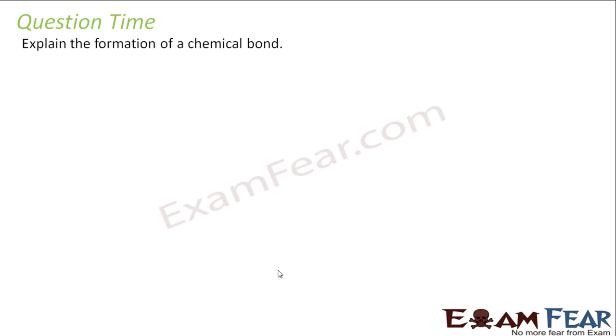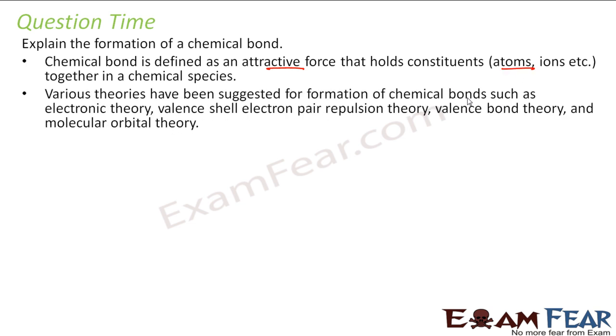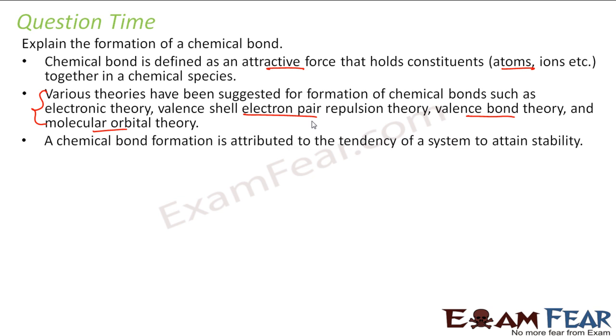Let's take some questions. Let's explain the formation of chemical bond. Very basic question. Why do we have chemical bond? Chemical bond is what? Attractive force that binds atoms or ions together. And there are various theories for the chemical bond. We have VSEPR, we have valence bond theory, molecular orbital theory, and we have Lewis theory. So many theories for chemical bond.